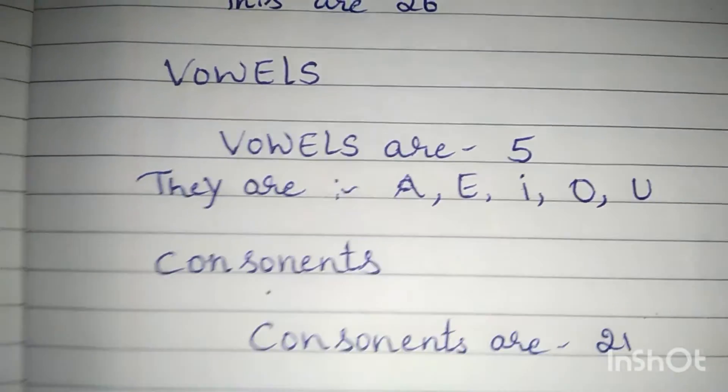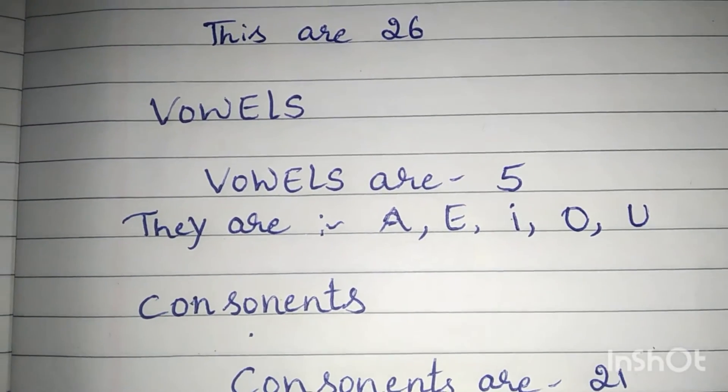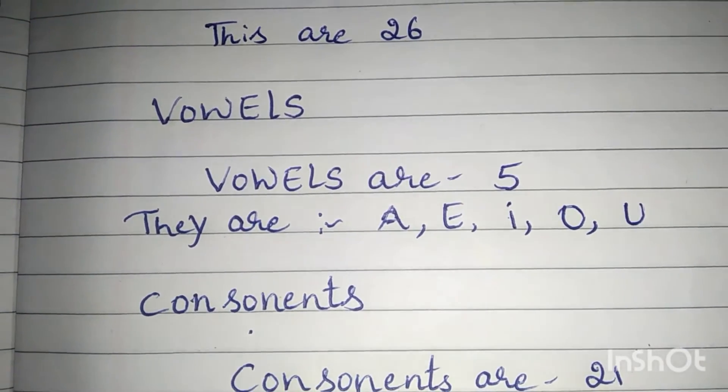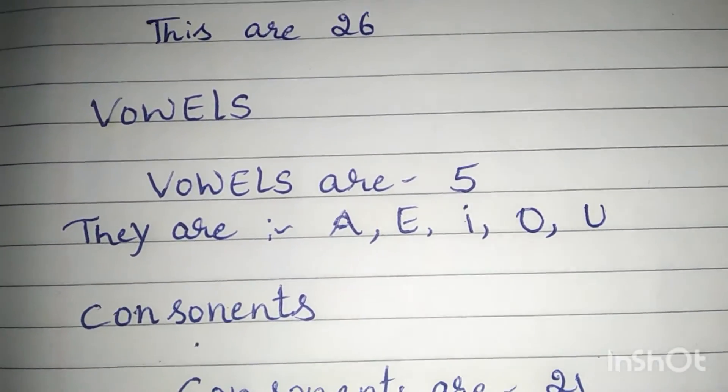Now we can see the vowels. Vowels are five. They are: a, e, i, o, u.